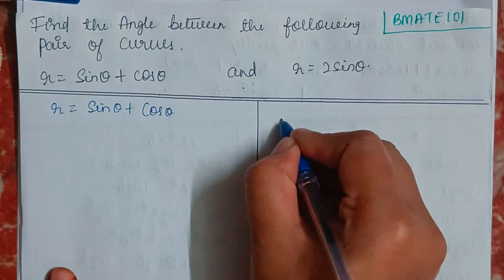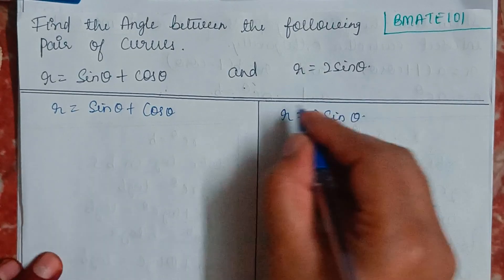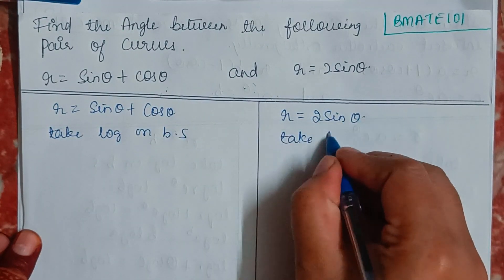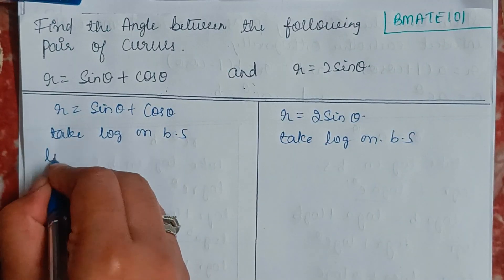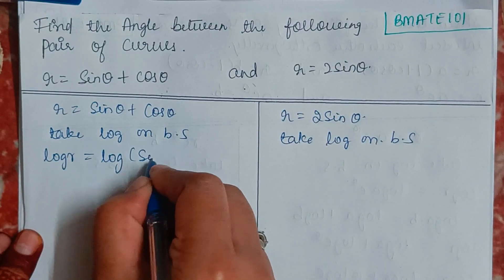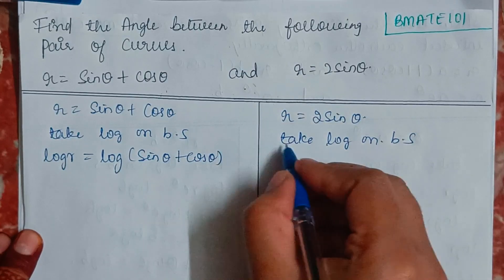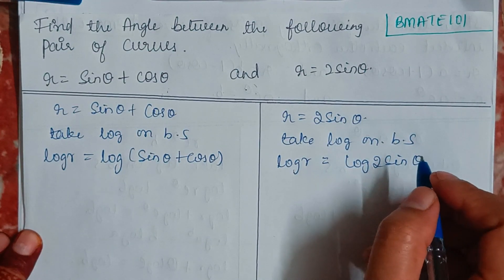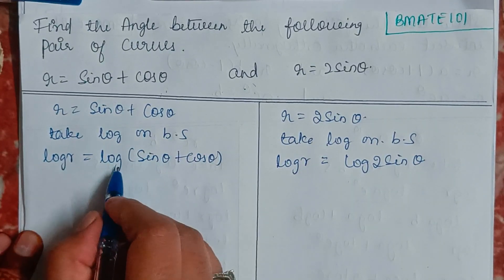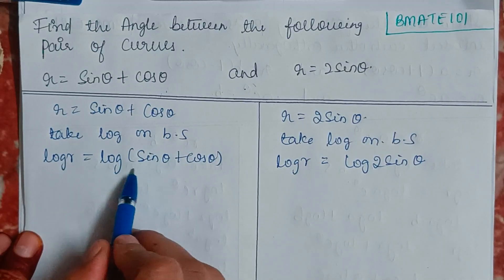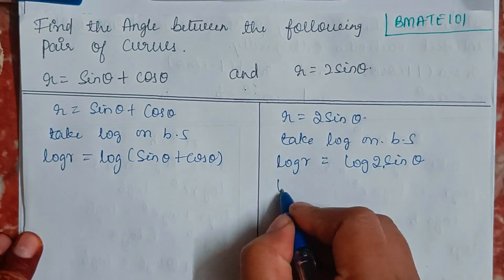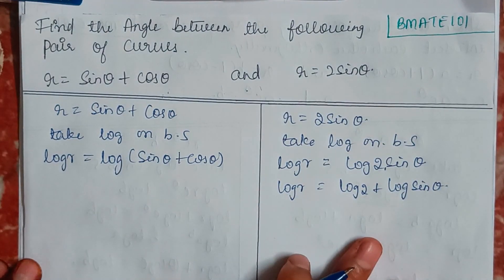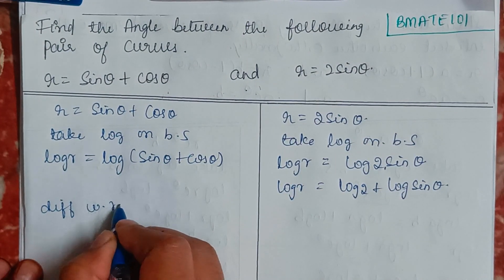For r = sinθ + cosθ and r = 2sinθ, we first take log on both sides of each equation. This gives log r = log(sinθ + cosθ) for the first curve. For the second curve, log r = log(2sinθ), which can be expanded using log product rules as log r = log 2 + log sinθ.